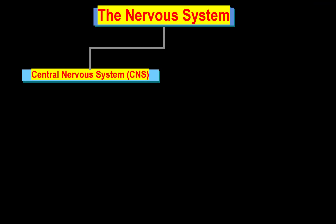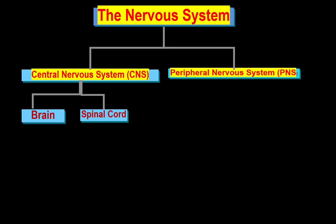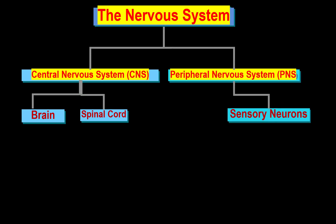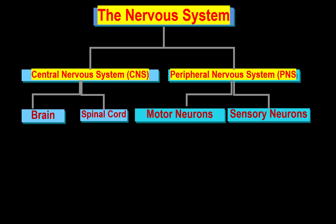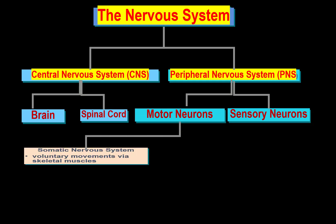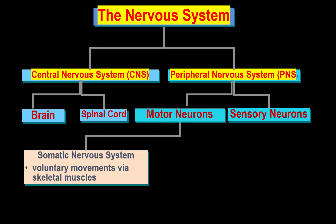So the Nervous System has two main parts: the Central Nervous System, which is divided into the Brain and Spinal Cord, and the Peripheral Nervous System, which has Sensory Neurons and Motor Neurons. The Motor part includes the Somatic Nervous System, which supplies the skeletal muscle and controls voluntary movements.